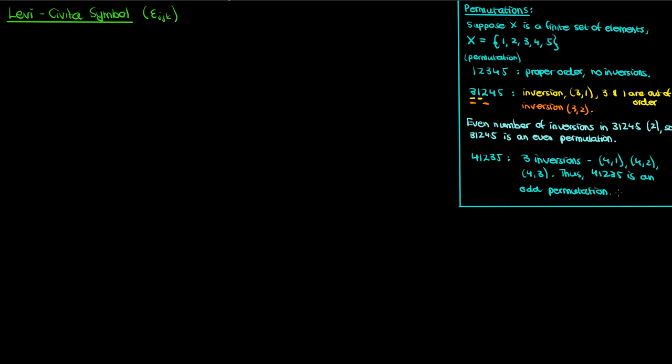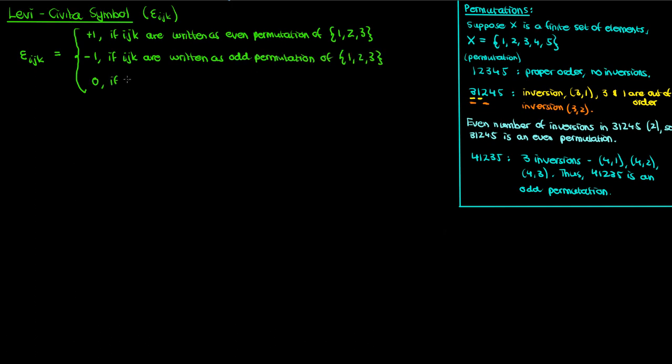I'm going to define the three-dimensional symbol here. There's also a two-dimensional symbol that's used less commonly, and of course you can go up to higher dimensional symbols as well. So the Levi-Civita symbol is denoted by epsilon ijk, and is defined according to the permutation of its indices, so how the indices are arranged. If the ijk are written as an even permutation of 1, 2, and 3, then the Levi-Civita symbol is positive 1. If the ijk are written as an odd permutation of 1, 2, and 3, then the Levi-Civita symbol is negative 1. And finally, if any of the ij or k are repeated, so something like 1, 2, 1 for instance, then the Levi-Civita symbol is 0.